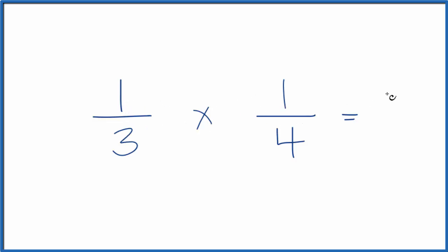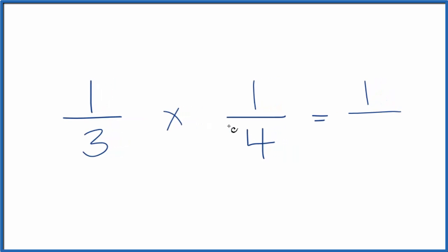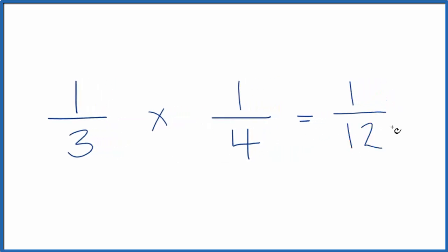We take one times one, we get one, and then we take three times four, that gives us twelve. So one-third of one-fourth, that's one-twelfth.